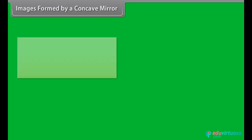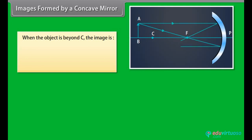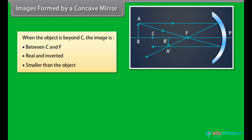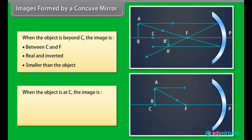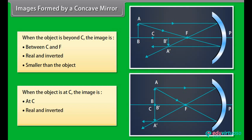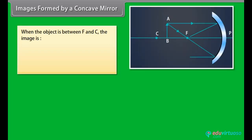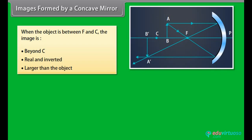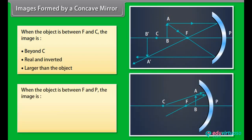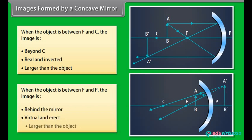Images formed by a concave mirror: When the object is beyond C, the image is between C and F, real and inverted, and smaller than the object. When the object is at C, the image is at C, real and inverted, and same in height as the object. When the object is between F and C, the image is beyond C, real and inverted, and larger than the object. When the object is between F and P, the image is behind the mirror, virtual and erect, and larger than the object.